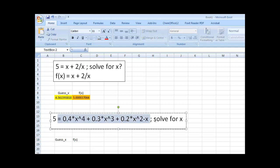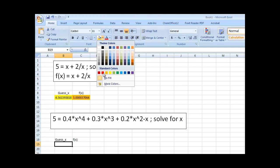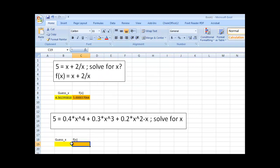In this case, f of x is this stuff to the right here. And just for clarity, I'm going to make these different colors. I'm going to guess 1. For my guess value, f of x is equal to 0.4 times b19 to the 4th power, plus 0.3 times b19 to the 3rd power, plus 0.2 times b19 squared. We've got to make sure we type our formulas right. Minus x.